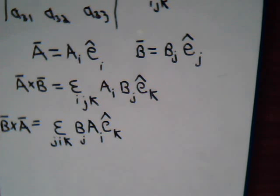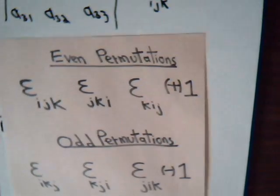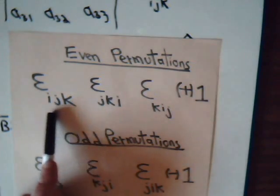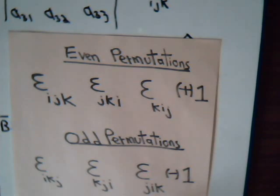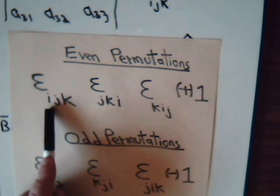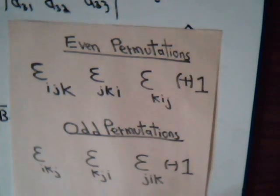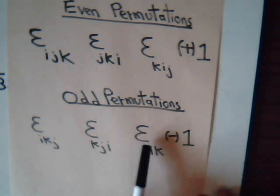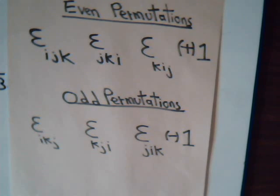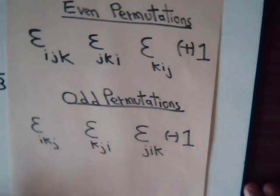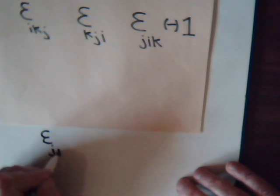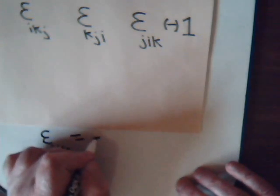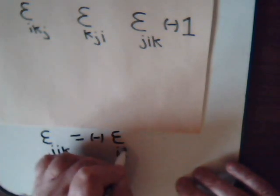Now, remember in the last video that here's our prototypical sequence. And if we shuffle these indexes around or permute them an even number of times, then our epsilon symbol has a value of plus 1. If we deviate from this by having an odd number of permutations, then the epsilon permutation symbol has a value of minus 1. And we have j, i, k, but what that means is that we can say that epsilon j, i, k is just minus epsilon i, j, k.